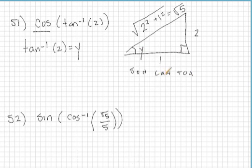So cosine is adjacent over hypotenuse. So the cosine of the tangent inverse of 2, let's go ahead and carry it through down here, is actually equal to the cosine of y, because that's what we call this whole big mess in there.